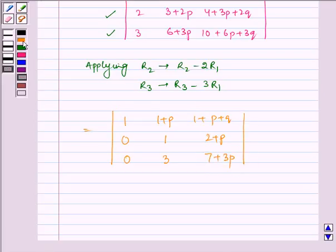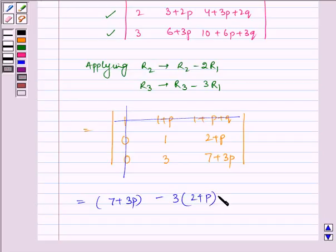Now expanding it, we get eliminating this row and this column, we get which is equal to 7 plus 3p minus 3 multiplied by 2 plus p, which is equal to 1.